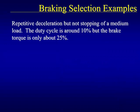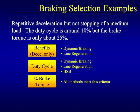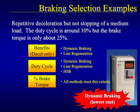Next, an application that has repetitive deceleration but not stopping of a medium load. The duty cycle is around 10%, but the brake torque is only about 25%. Because DC injection and high-slip braking are only used for complete stops, they are not viable options. Both dynamic braking and line regeneration meet the duty cycle requirements and all braking methods meet the braking torque requirements. Dynamic braking is most suitable for this application because it meets all necessary criteria but is less expensive than line regeneration.